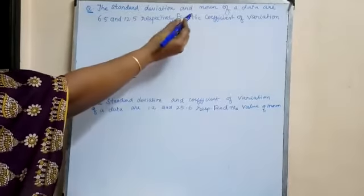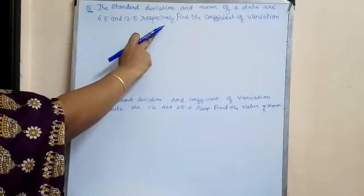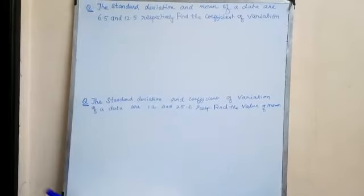The question is: the standard deviation and mean of a data are 6.5 and 12.5 respectively. Find the coefficient of variation.